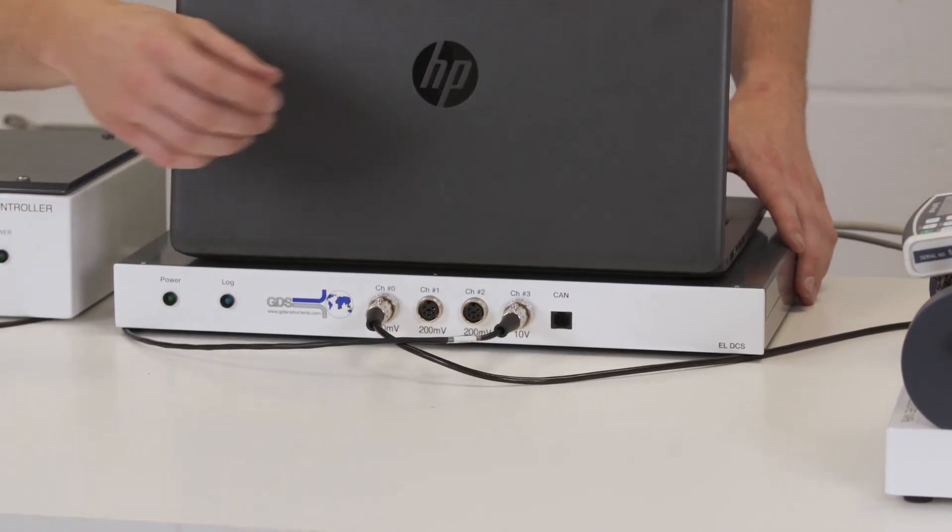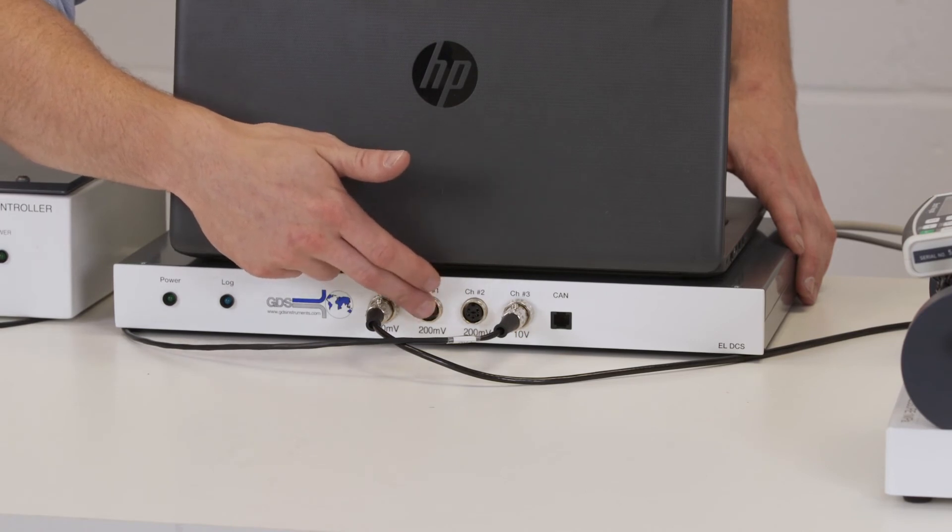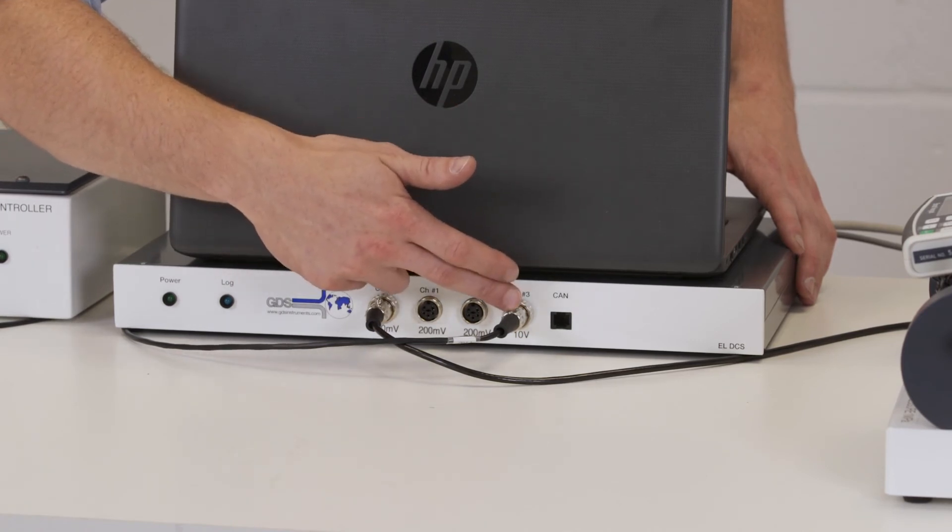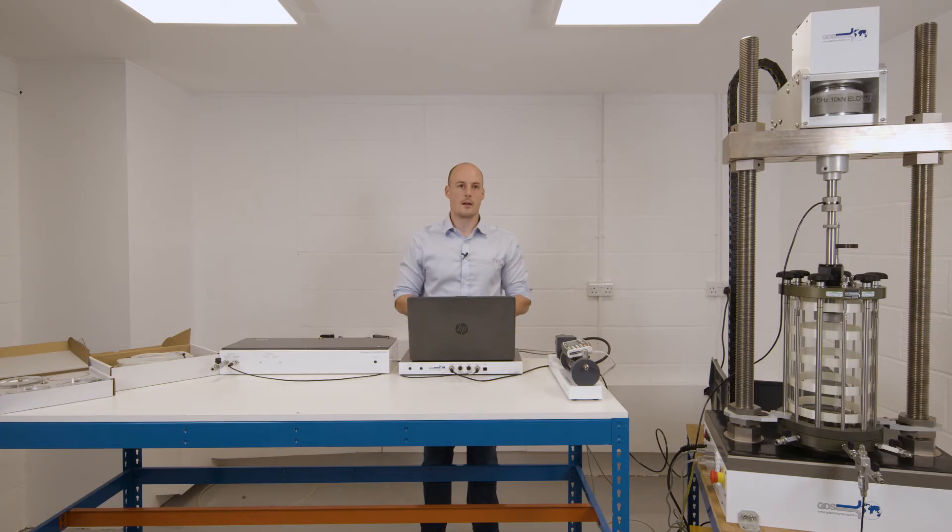Transducers connect into the front predominantly load cell, pore pressure and cell pressure with an optional spare channel for another transducer. We can also provide a secondary box which works as a logger only giving an additional 4 channels.